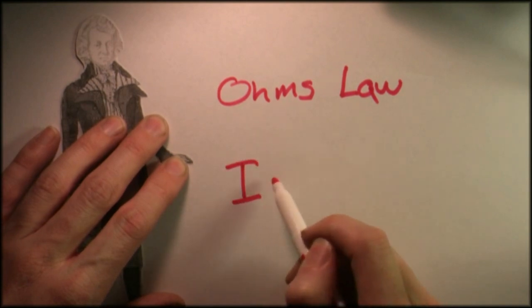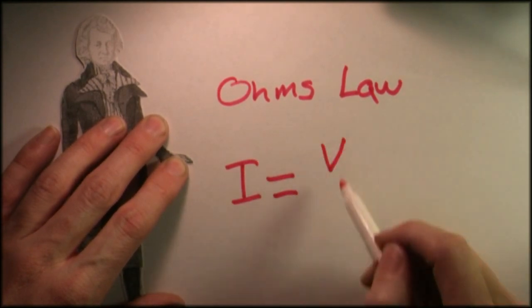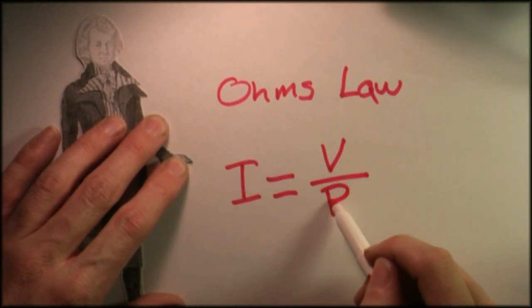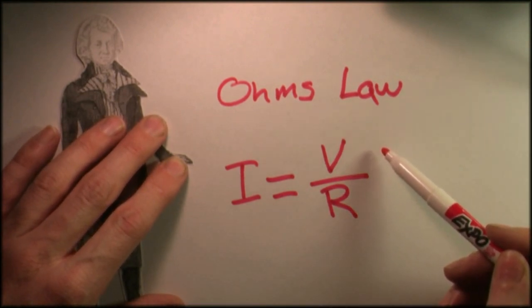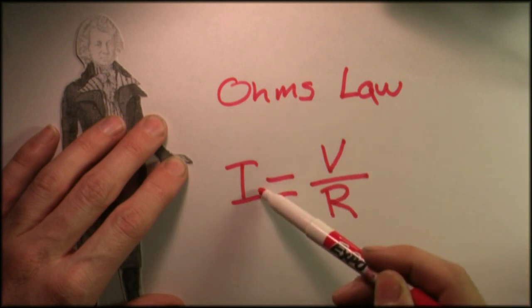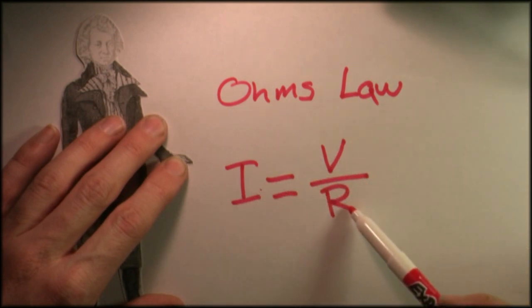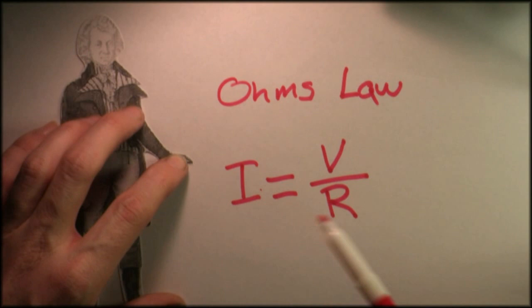Ohm's Law is current equals voltage divided by resistance. Some things to keep in mind is that current is proportional to voltage. The more the voltage, the more the current. Resistance has the opposite effect. More resistance, the less current.